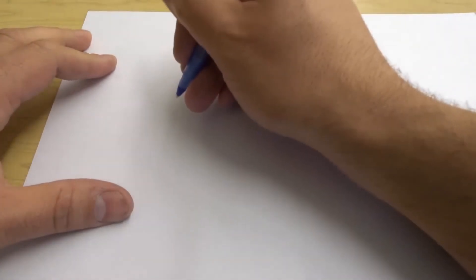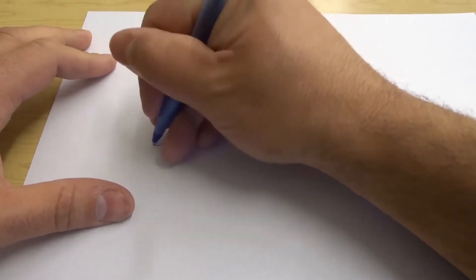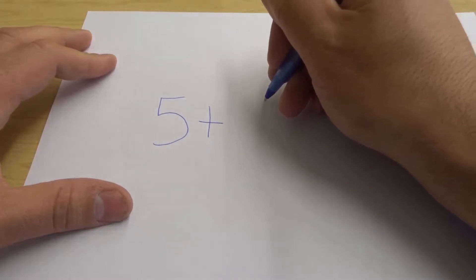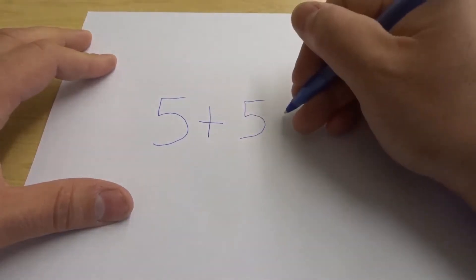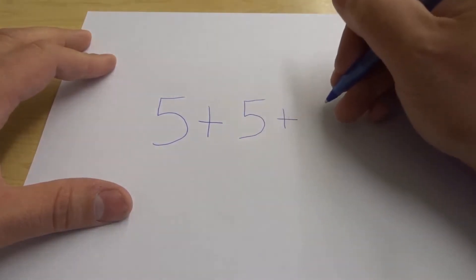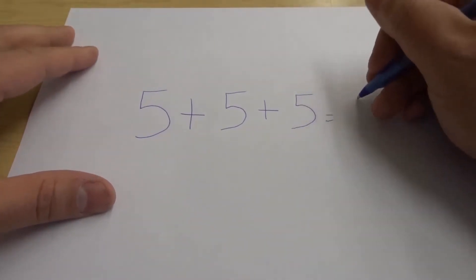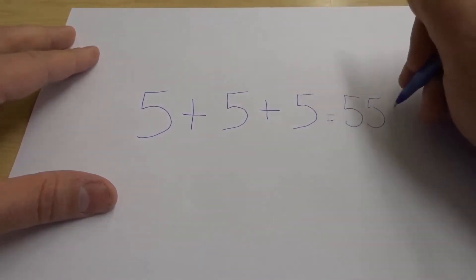So you're going to write down in nice big numbers: 5 + 5 + 5 = 550.